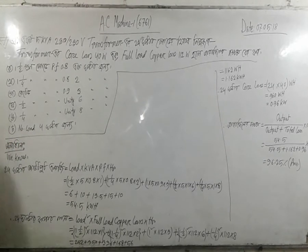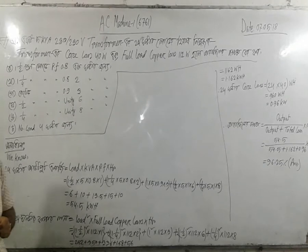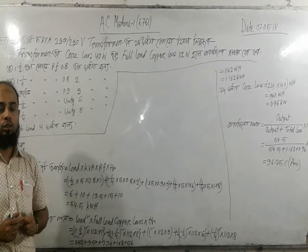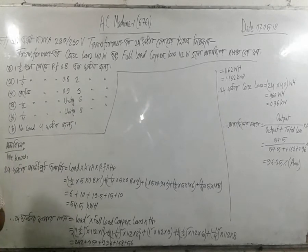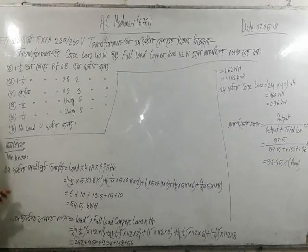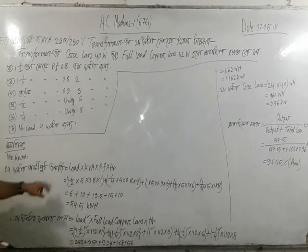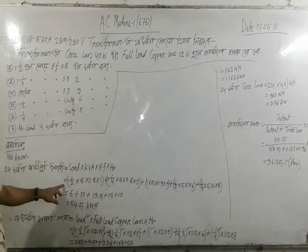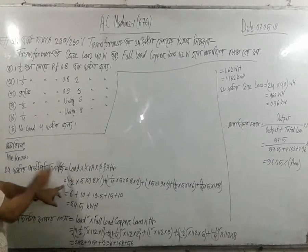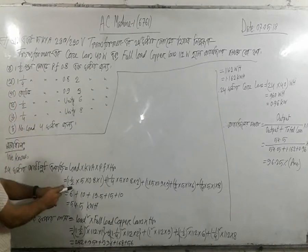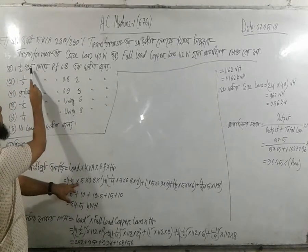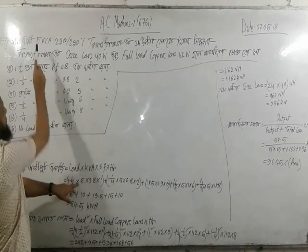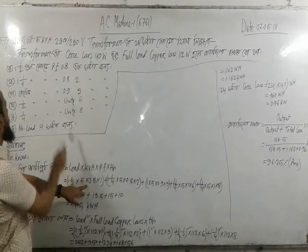The efficiency formula is: output divided by output plus losses, multiplied by 100. The output is calculated as load into kVA into power factor into hours. No-load is 8 hours and 4 hours respectively.